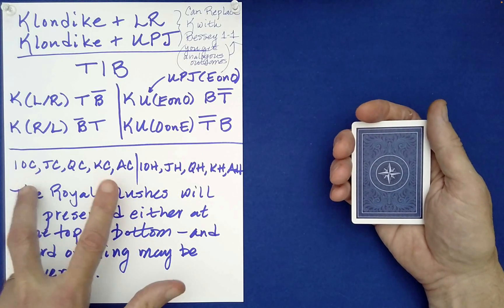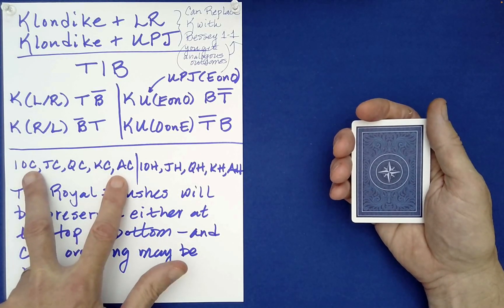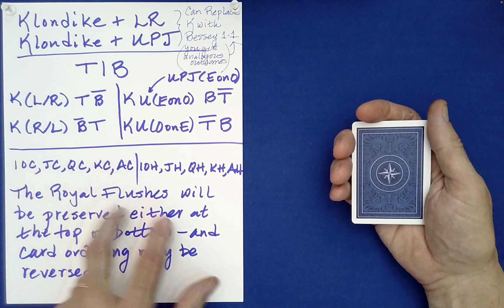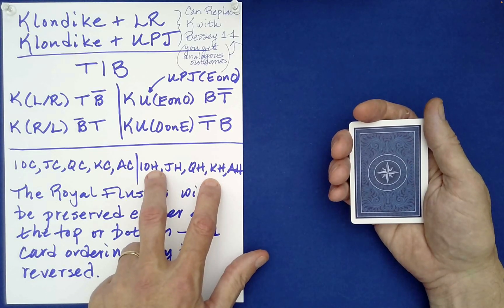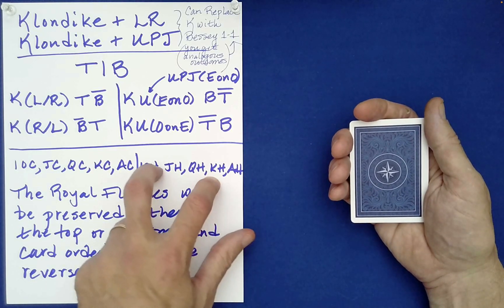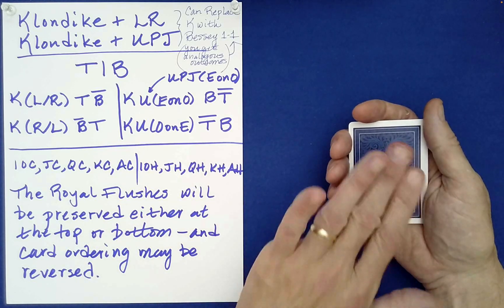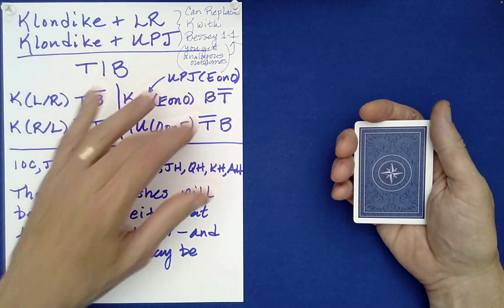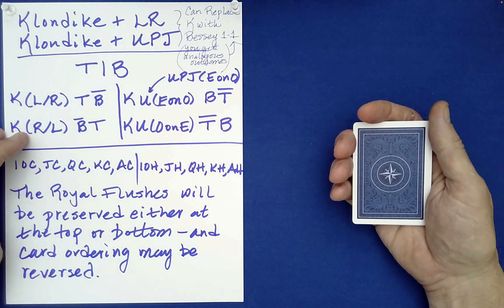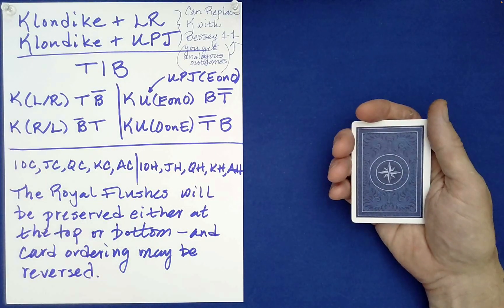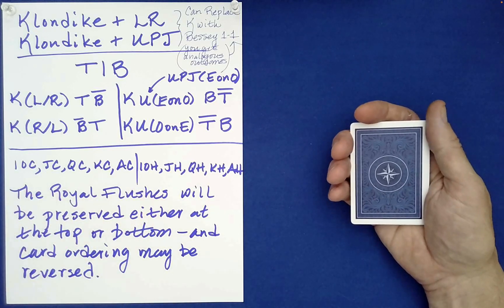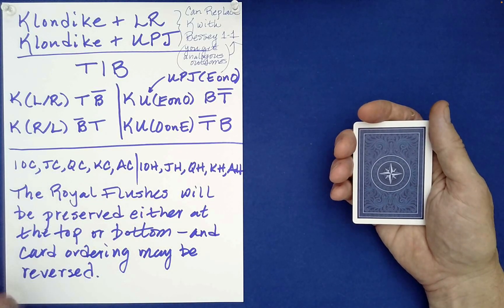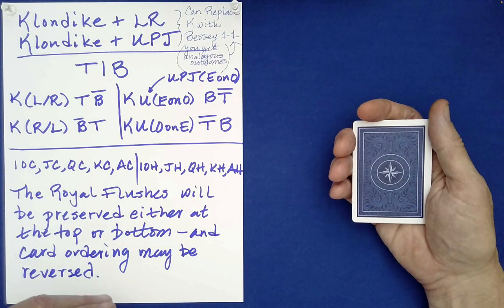For example, if you had a royal flush on top in clubs and a royal flush in hearts on the bottom, and you did all of these over-codings and then any of these shuffles in any quantity, you'll preserve the fact that the top half will be one of these two royal flushes and the bottom half will be the other one.